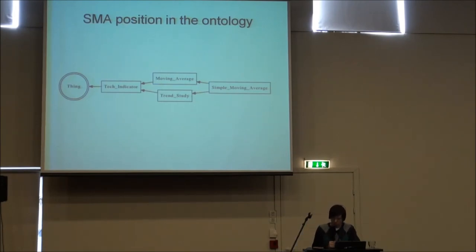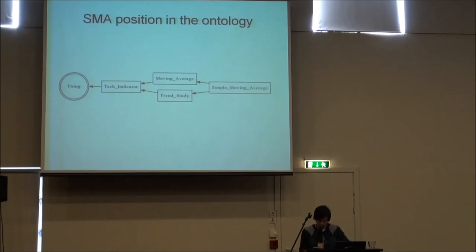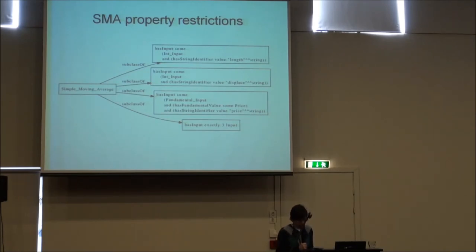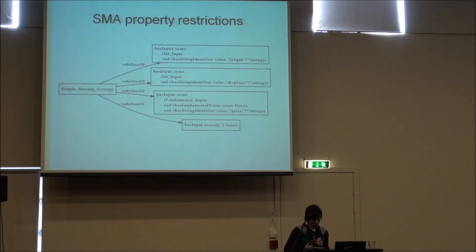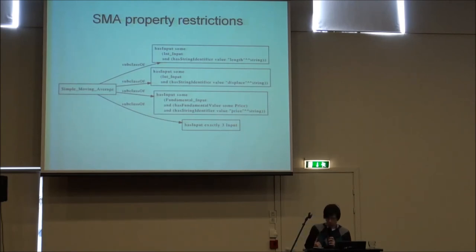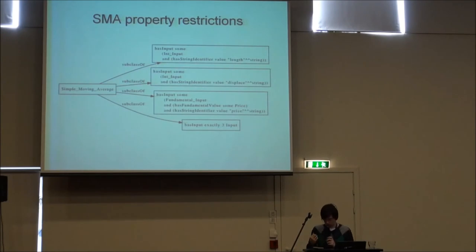Let's see where the SMA class should reside. Obviously, it is a subclass of the Moving Average class. Also, SMA is a trend-following indicator, so one can study a trend with it. Now we describe the parameters. All parameters have their names, or string identifiers as called in the ontology, and some value. The N parameter will have string identifier 'length' because it is the length of the time period, and some integer value. 'Displace' is described the same way. But the P parameter is slightly different because it is a price, meaning it is a fundamental input and must have an instance of the price class as a value.